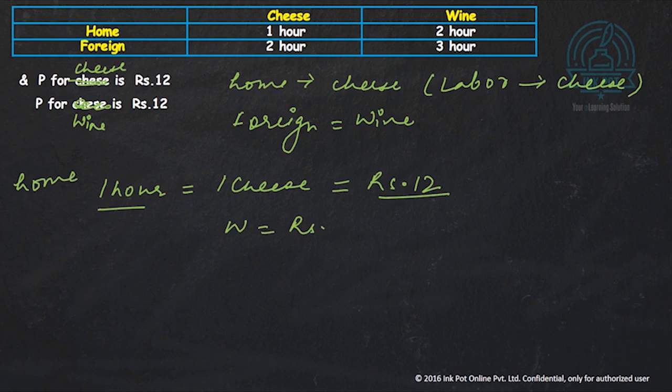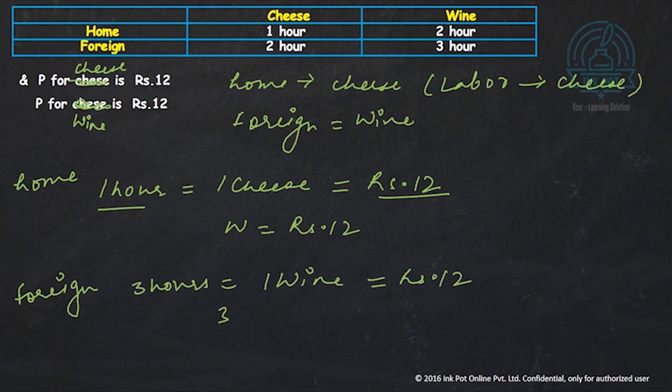In a foreign country, in 3 hours we produce 1 unit of wine and 1 unit of wine is worth Rs.12 which means 3 hours are worth Rs.12 which means the wage rate per hour is going to be Rs.12 by 3 which is Rs.4. So the relative wage will be W upon W star which is 3.